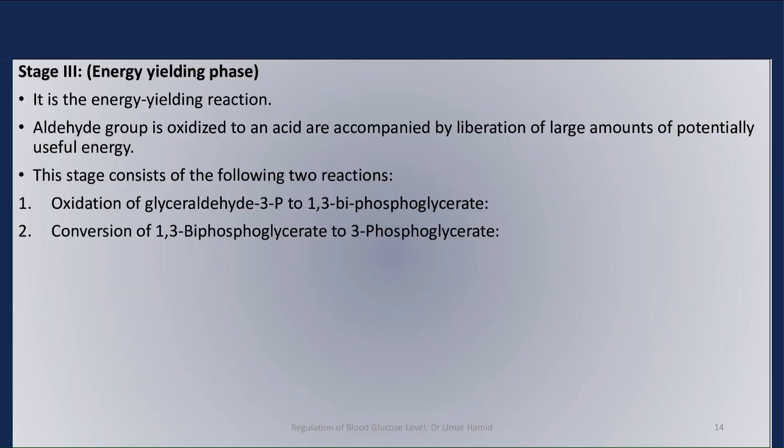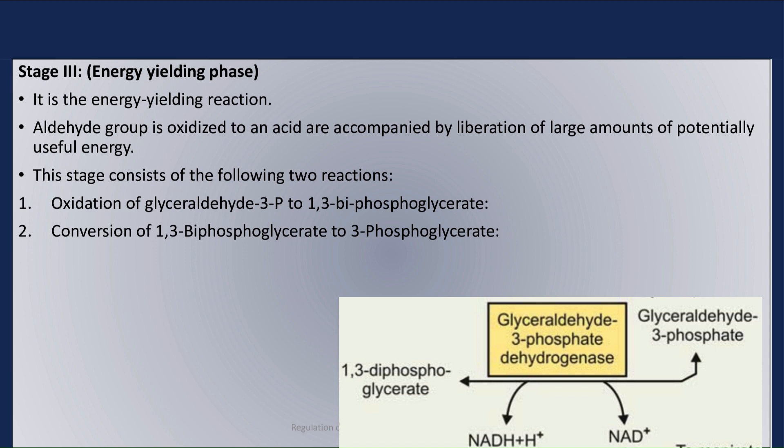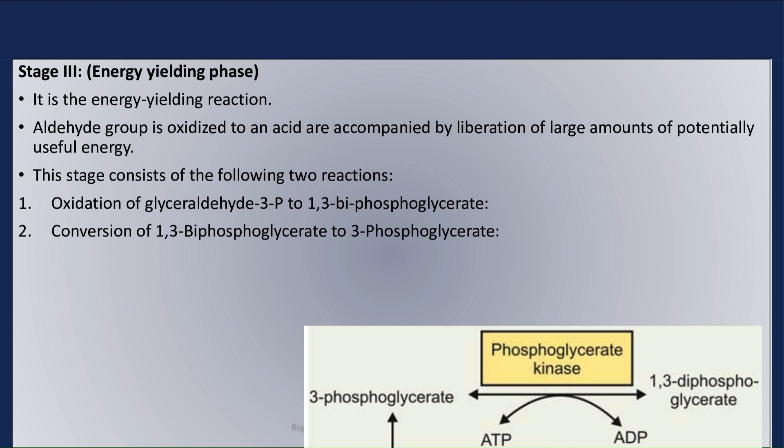Stage 3 of glycolysis is the energy-yielding phase. In this stage, the aldehyde group is oxidized to an acid, accompanied by liberation of large amounts of potentially useful energy. This stage consists of two reactions: Step 1 is the oxidation of glyceraldehyde-3-phosphate to 1,3-bisphosphoglycerate, and Step 2 is the conversion of 1,3-bisphosphoglycerate to 3-phosphoglycerate.